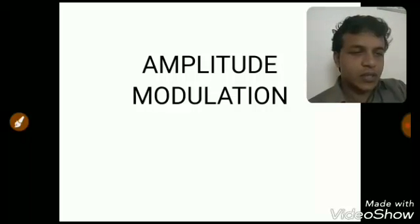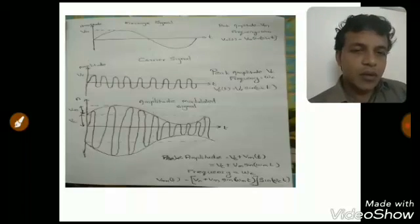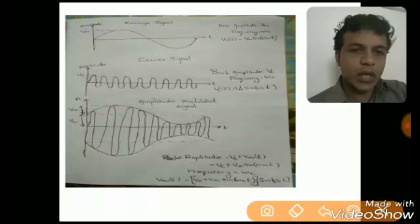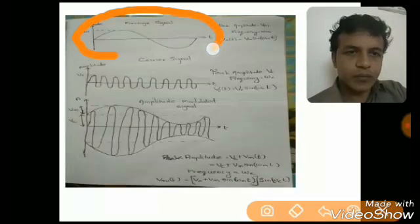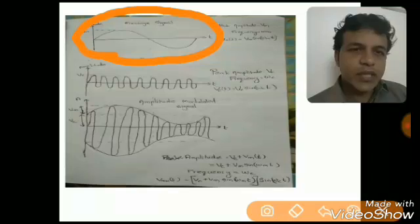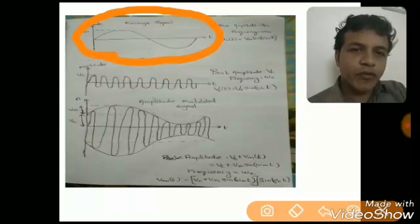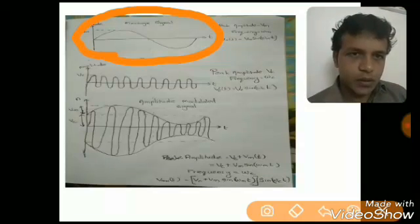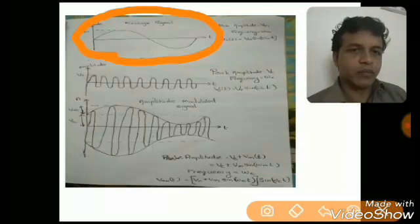Now we shall discuss about amplitude modulation. In this slide we are considering a message signal. This message signal has an amplitude of Vm and a frequency of omega m. It is a sinusoidal waveform.